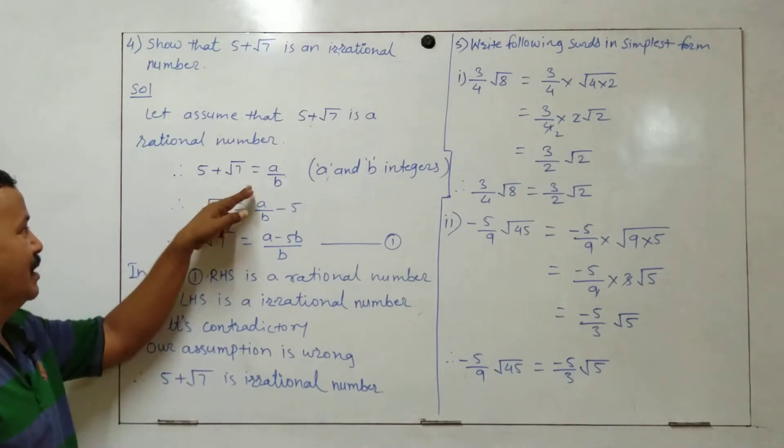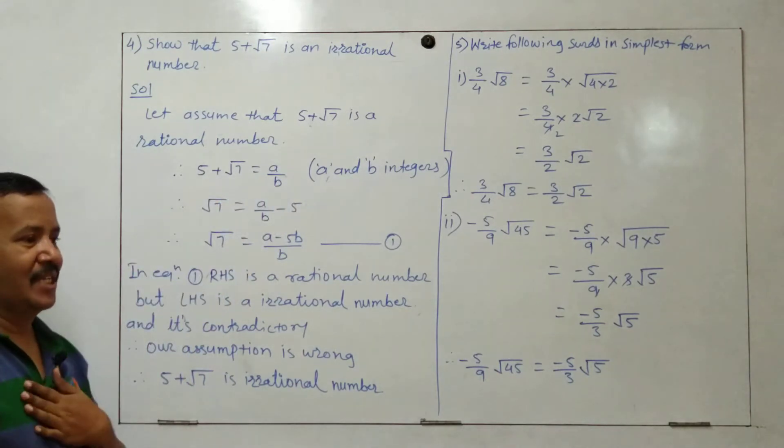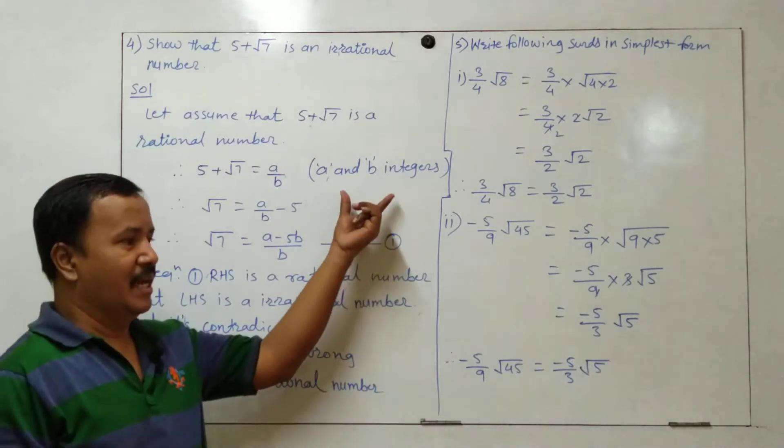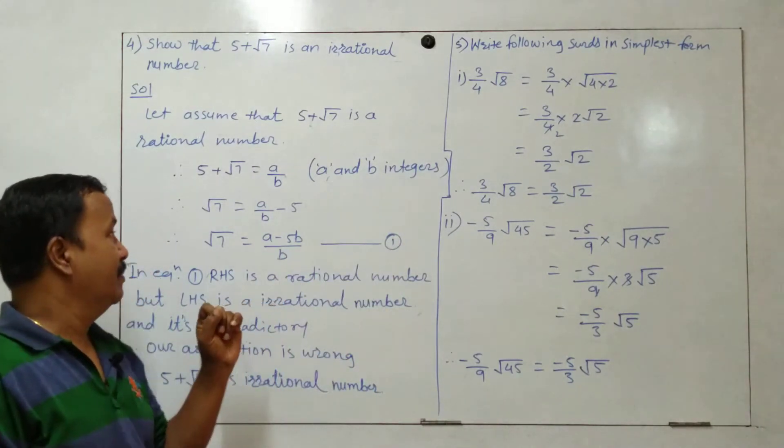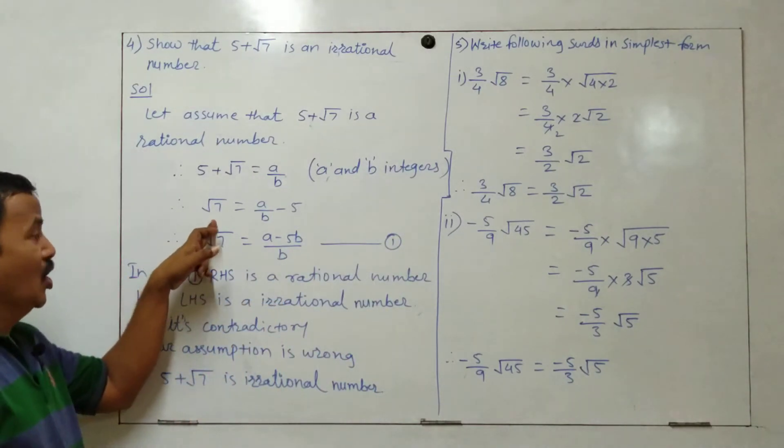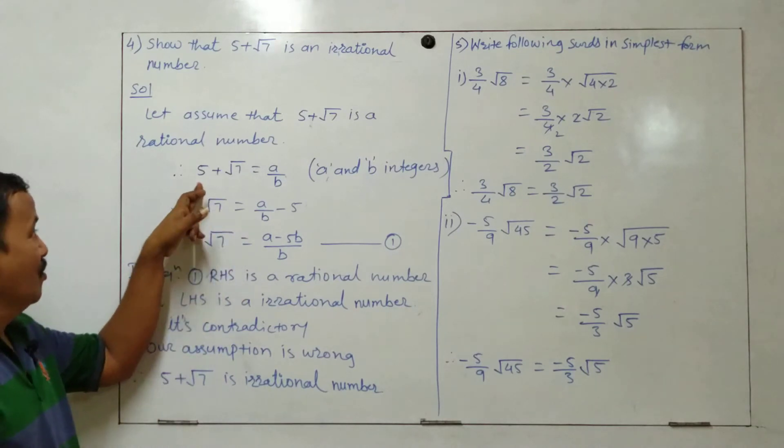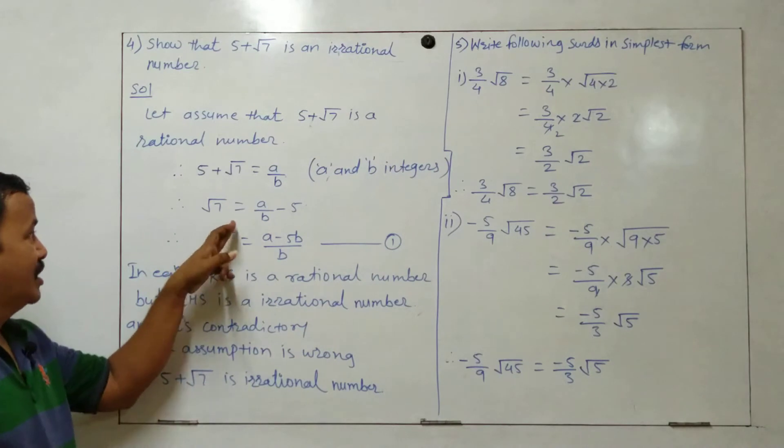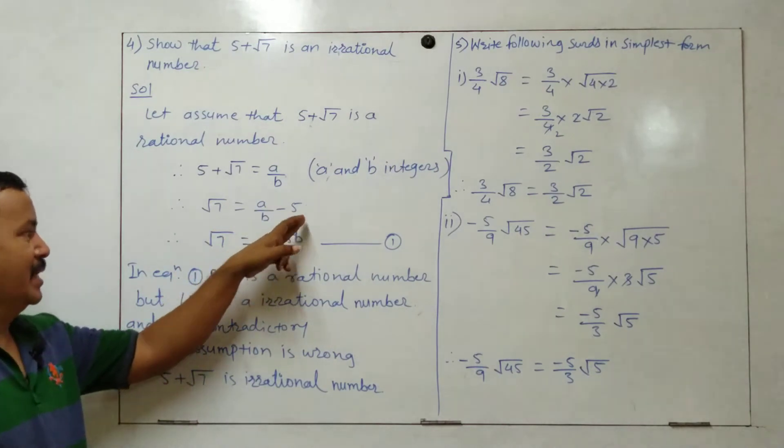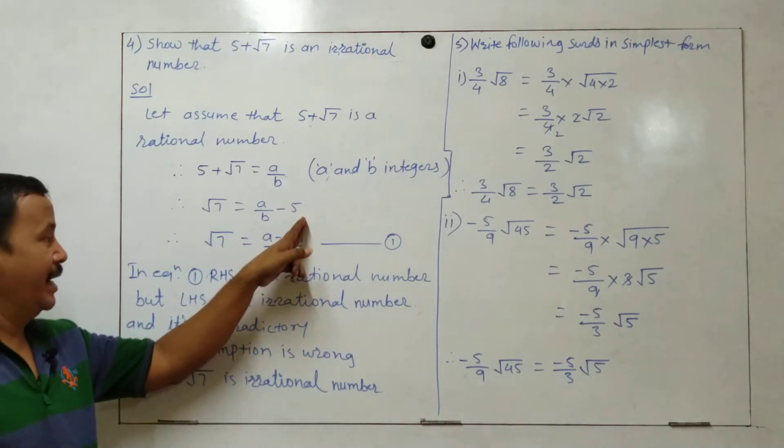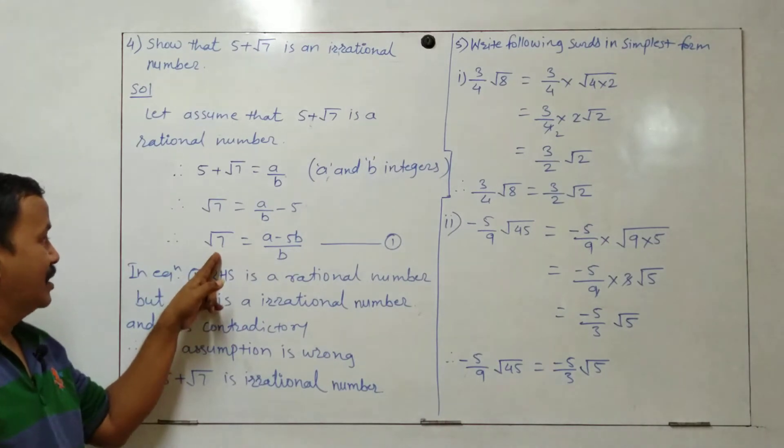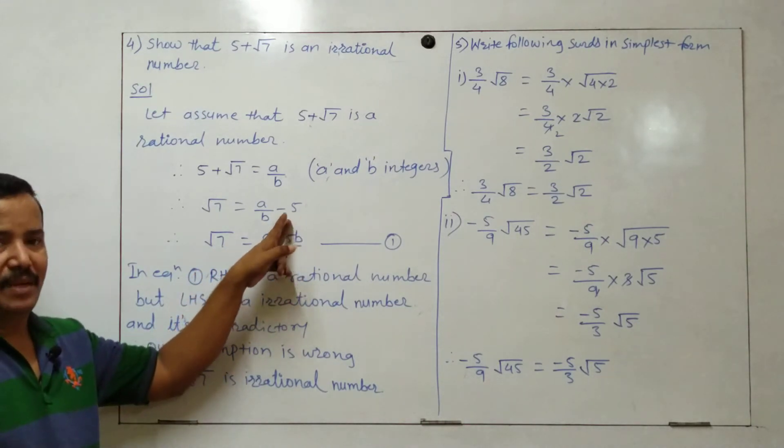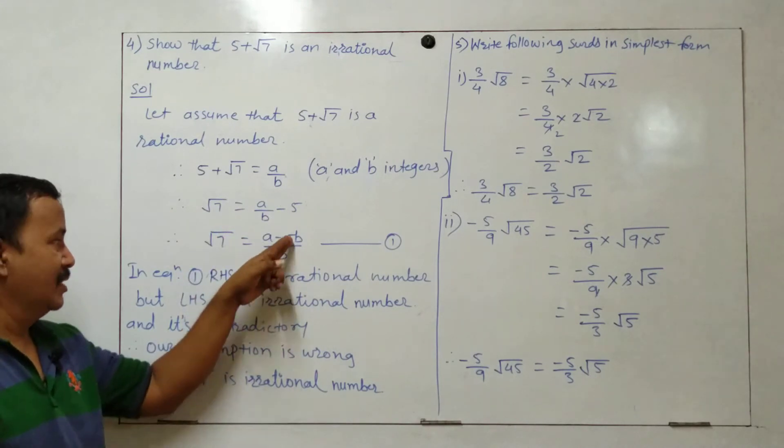Where a and b are integers. Therefore, root 7 is equal to... if we move 5 to the other side, root 7 is equal to a upon b minus 5, right? Now root 7 is equal to a minus 5b, with denominator the same, so a minus 5b upon b.